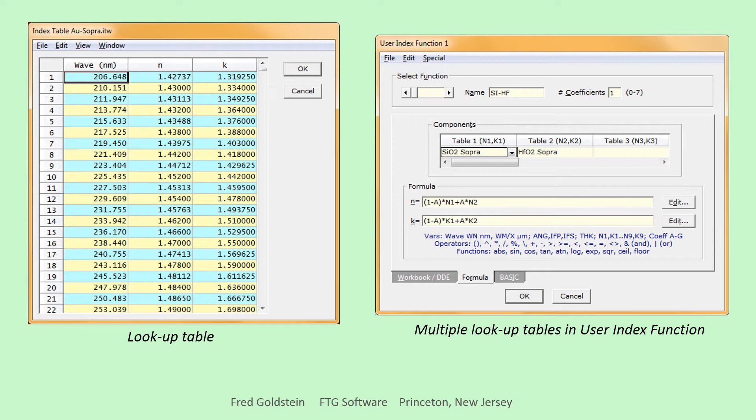The not-so-familiar image at the right indicates how two index tables might be combined. N1K1 refers to an SiO2 table, while N2K2 refers to hafnium dioxide HfO2.